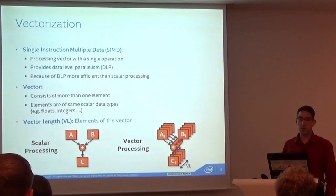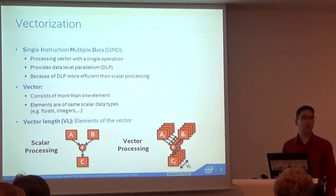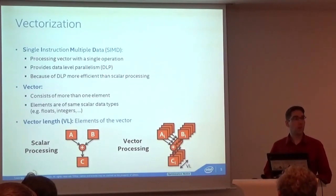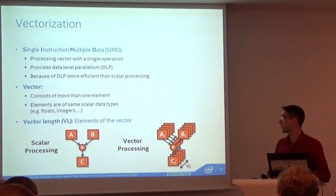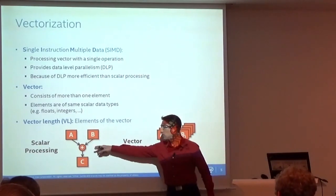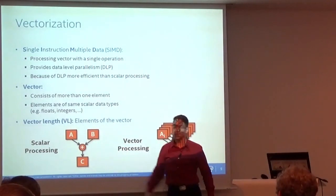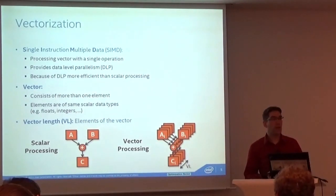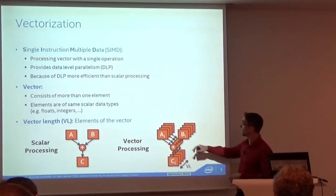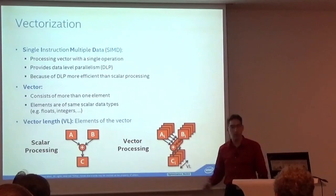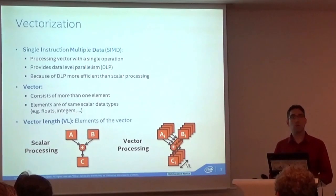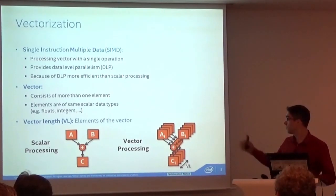SIMD means Single Instruction Multiple Data. We use one instruction and provide multiple elements to it. Instead of scalar processing — where we have operands A and B, one instruction, and get a single scalar result — with more transistors we can provide support for vectors. We provide a vector of A, a vector of B, and for each element inside these vectors, we apply the same operation: single instruction to multiple data.